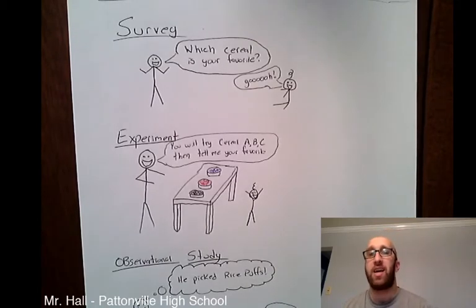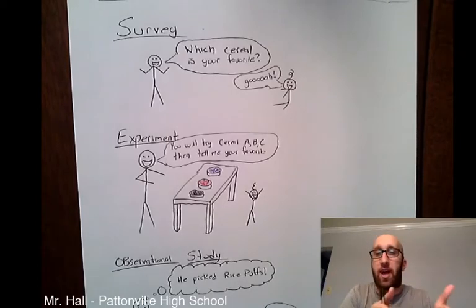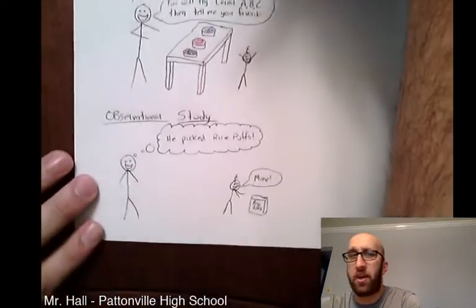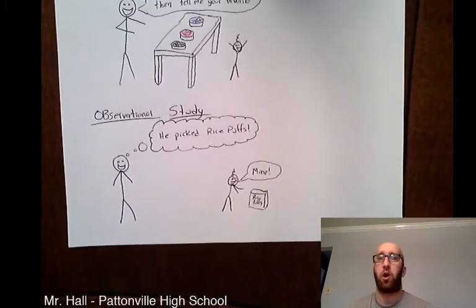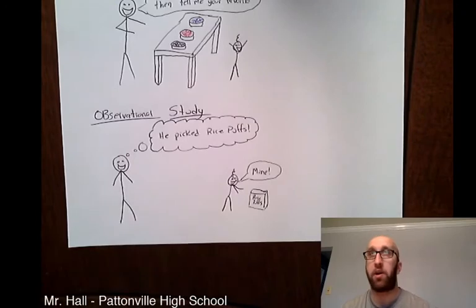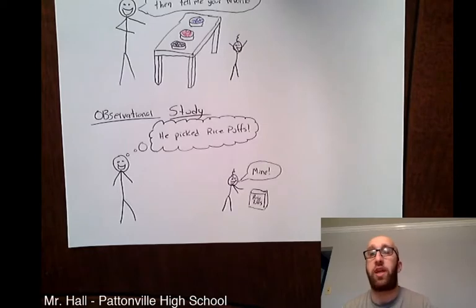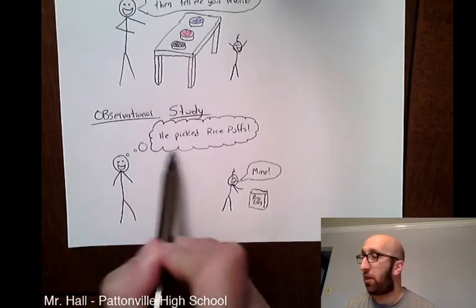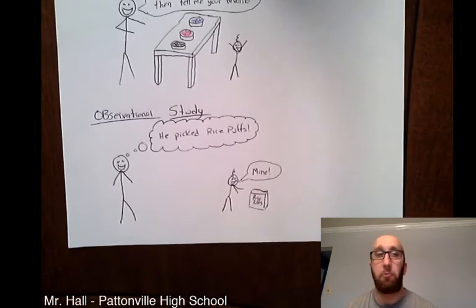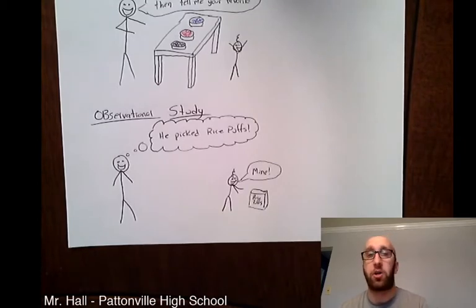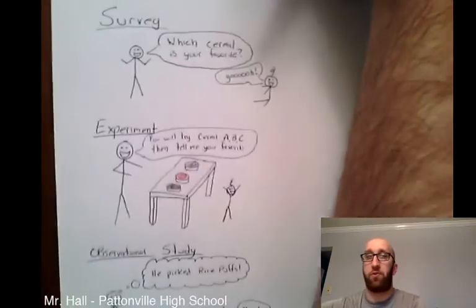There's some involvement on my end — it's not just a question, there's something that's going to happen and then we get information from that. In an observational study, the key is in the name: you're just sitting back and watching what happens to the subjects you're studying and what they choose to do. In my illustration, I'm just observing — I notice he picked rice puffs. I didn't set up any options; I just sit back, watch, and record information.